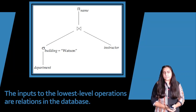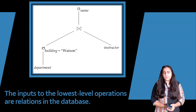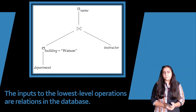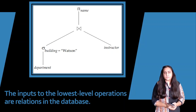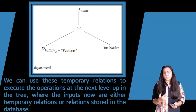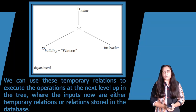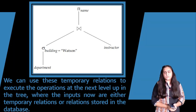When we begin from the bottom-most level, we are working with tables that are actually present in the database. That is not true once we move upwards — then we might be working with the results of operations performed on those tables. As you can see, department is an actual table present in your database. Once we apply some condition to this table, we can create temporary relations, which can then execute operations on the next level of the tree, where inputs are either temporary relations or relations stored in the database.